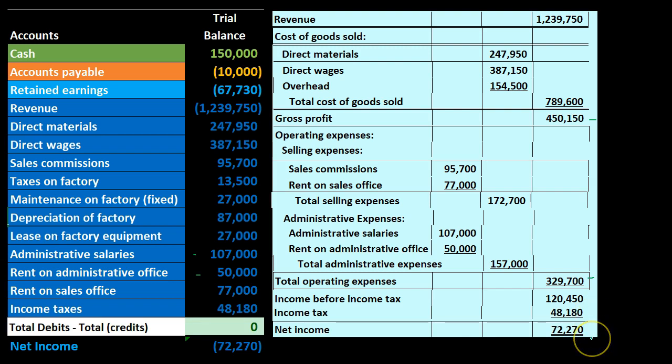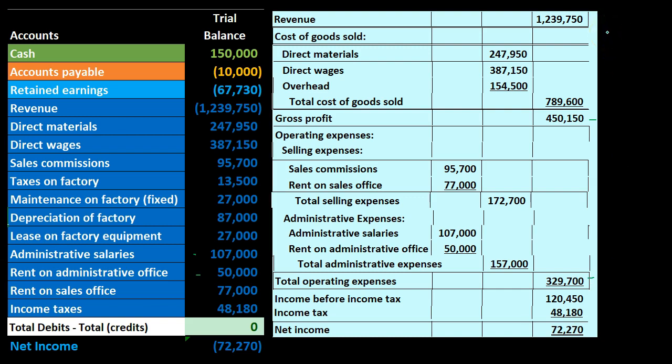This standard income statement is very useful for telling us what happened in the past. It's great for grouping information by purpose — what were these expenses for in order to help generate revenue? What category of activity did each expense support in order to reach the goal of revenue generation?